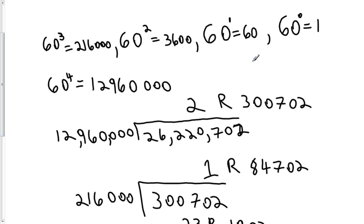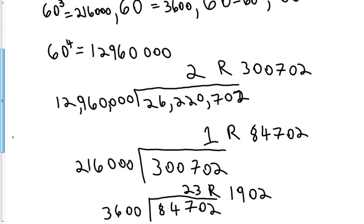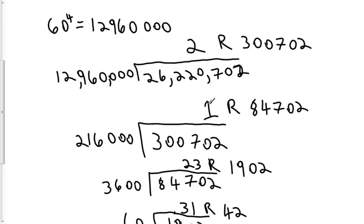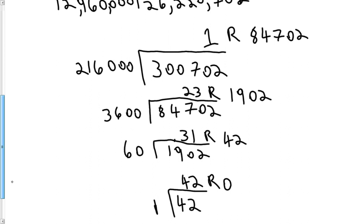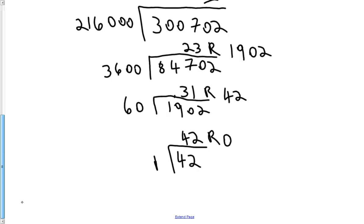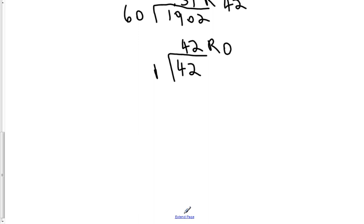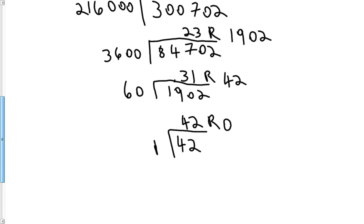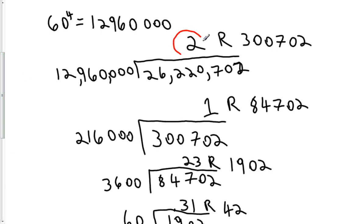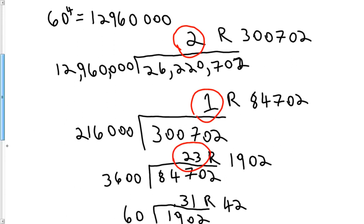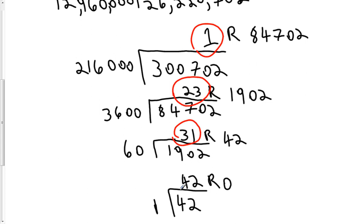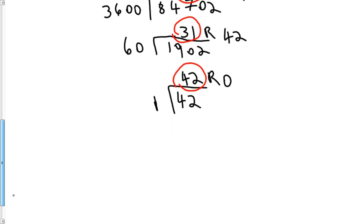There are going to be five place values, and the numerals that I'm going to put in are numerals representing 2, 1, 23, 31, and 42. The place value all the way to the left needs to have the Babylonian numeral for 2 in it. These are the actual numbers that we're going to create Babylonian numerals for: 2, 1, 23, 31, and 42.